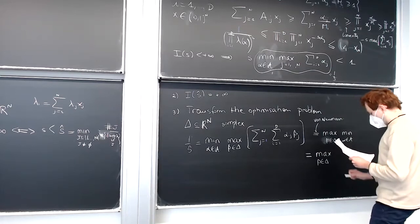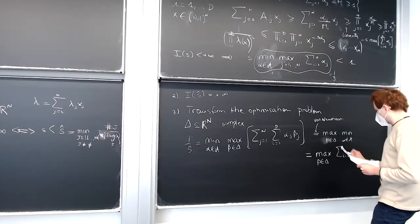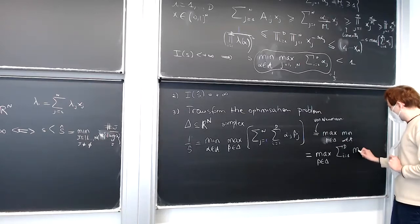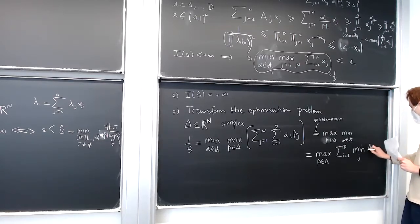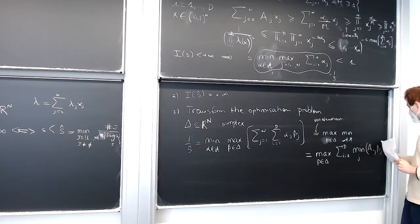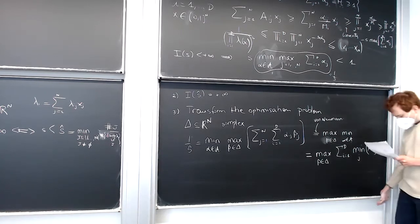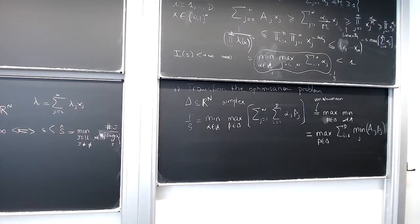We end up saying that this is the max of the sum of minimum over j of a_ij, because that would correspond to the vertices of my set. So it simplifies a little.